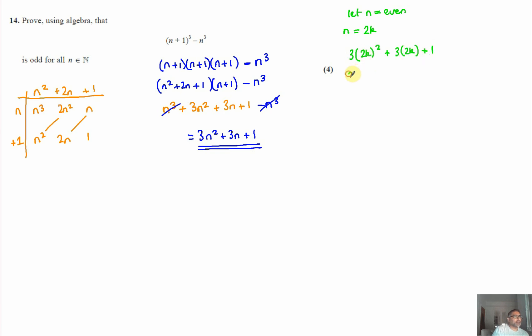And expanding that, it gives me 3 times 4k² plus 6k plus 1. And simplifying that down, that gives us 12k² + 6k + 1. And noticing here, if I factorize 2 out, that gives me 6k² + 3k in brackets like that. And what that means then, for any value of k, my outcome will always be odd.